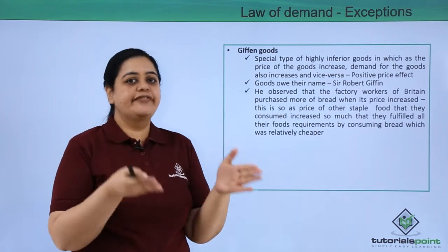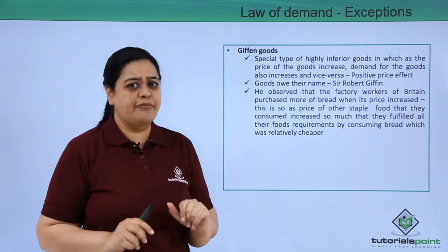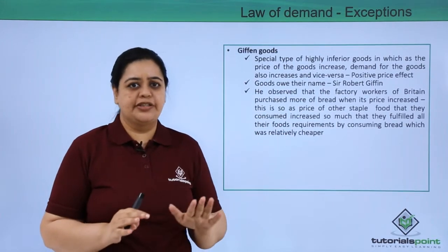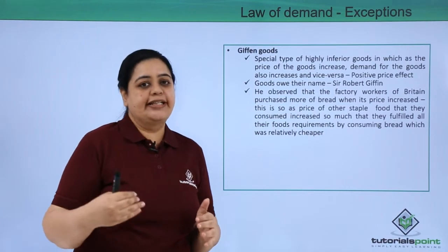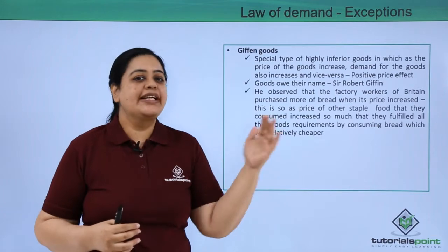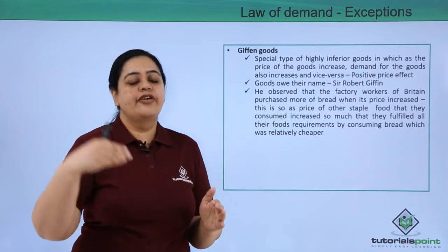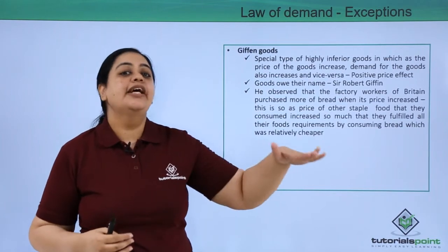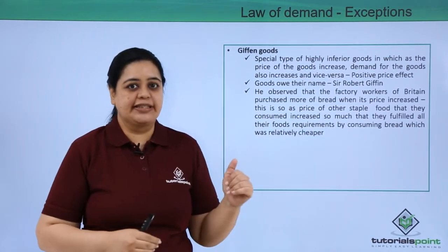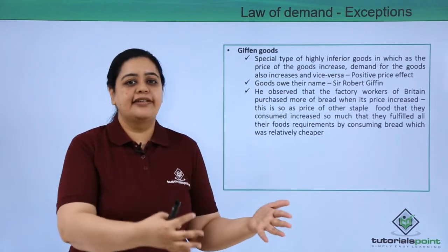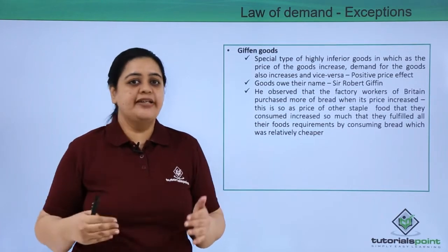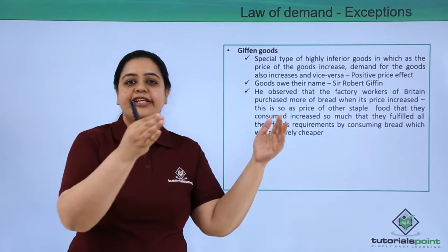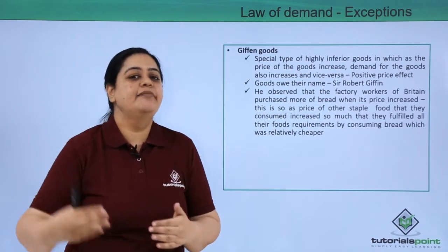Because these workers were not able to afford other staple foods due to the increase in their price, they started demanding more bread. For example, if they were consuming bread, milk, and cheese — bread being the inferior good and milk and cheese being normal goods — when the price of bread increased along with the price of milk and cheese, instead of demanding less bread, they demanded more of it because they couldn't afford milk or cheese. When the prices of milk and cheese went down, they could afford them again and started demanding more of those instead.